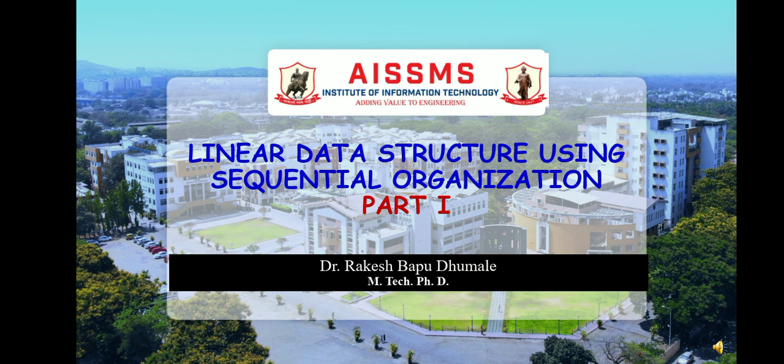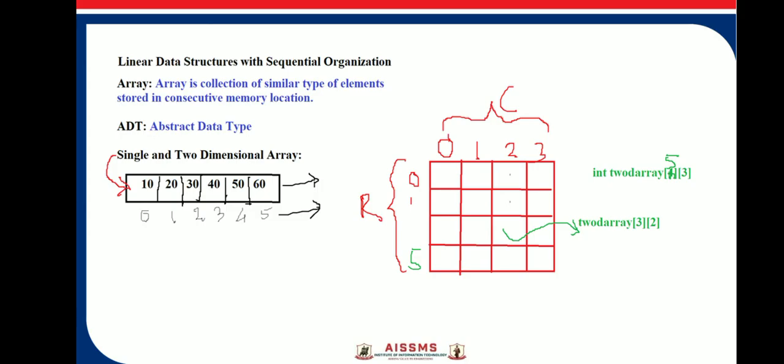In this video we will discuss the concept of linear data structures using sequential organization. Linear data structure with sequential organization consists of arrays, where an array is defined as a collection of similar type of elements stored in consecutive memory locations.